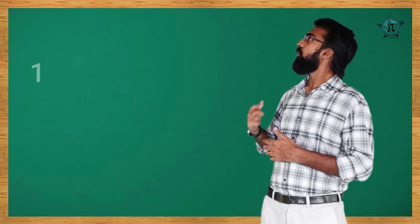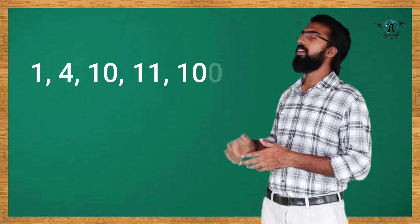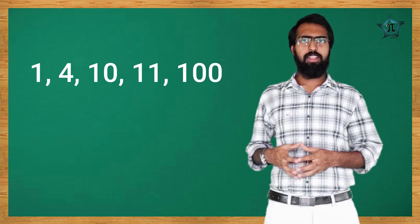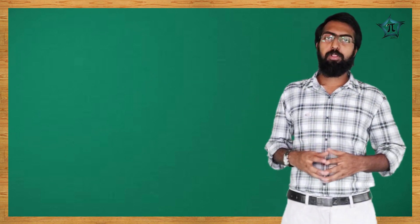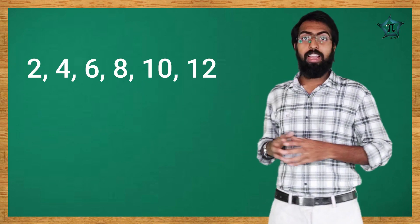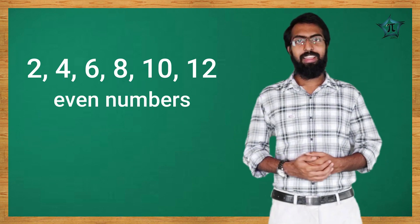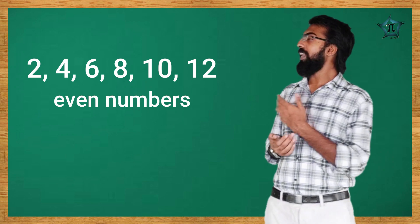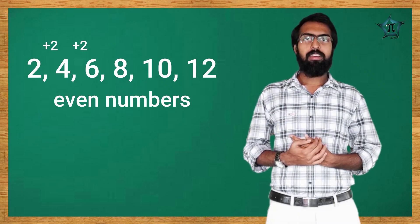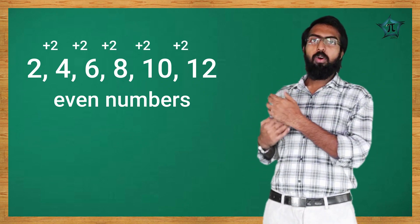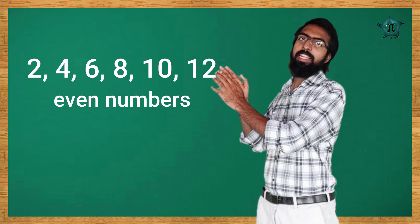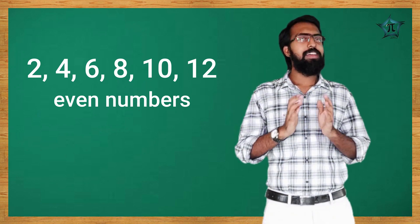For example, 1, 4, 10, 11, 100 — do these follow an order? No. But if there is an order, it is called a sequence. Another example: 2, 4, 6, 8, 10, 12. This follows a rule — it starts at 2 and adds 2 each time. That is the only rule. So there is a rule here — this is a sequence.